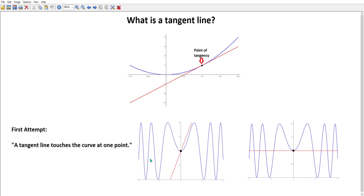So we look at this complicated function, the blue one here, and here's a red line that indeed touches it at one point. But I think all of us look at that and say that's not a tangent line.